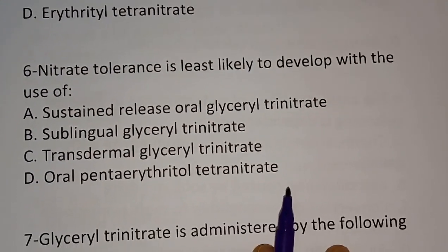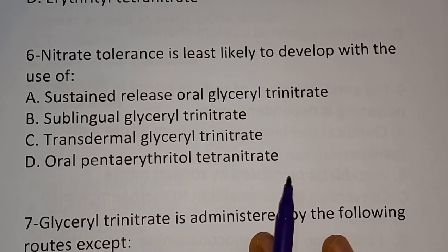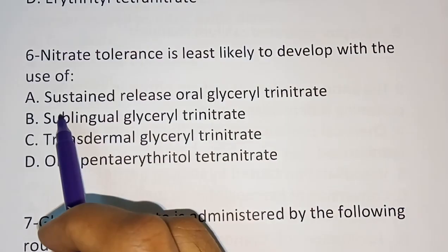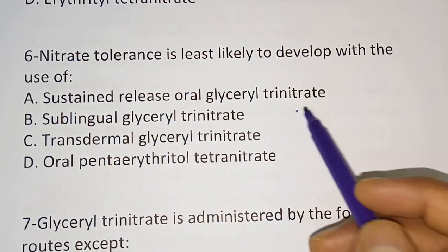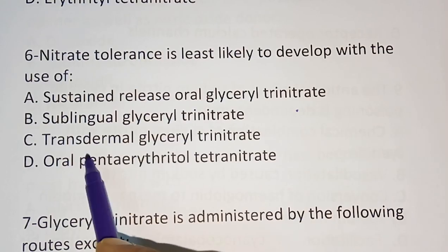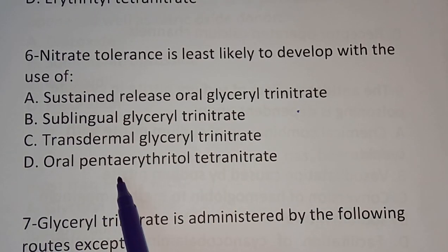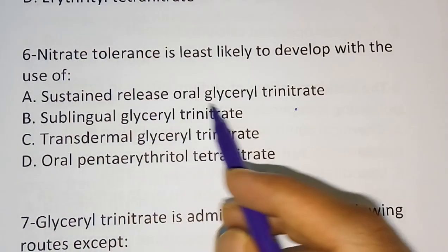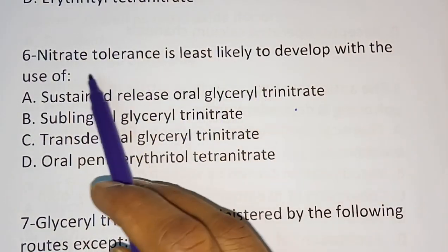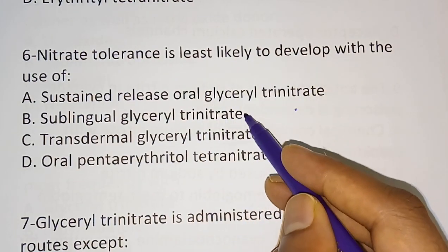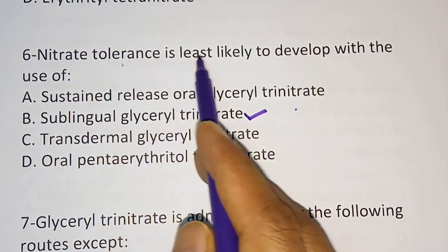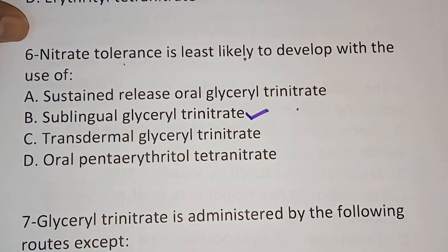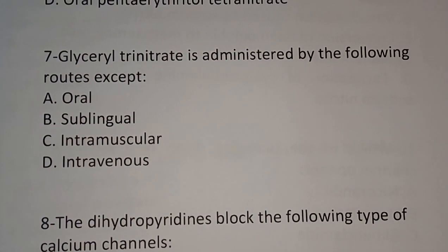Question six: nitrate tolerance is least likely to develop with the use of which drug? Options: A) sustained-release oral glycerol trinitrate, B) sublingual glycerol trinitrate, C) transdermal glycerol trinitrate, D) oral pentaerythritol tetranitrate. The correct answer is sublingual glycerol trinitrate — the chances of nitrate tolerance are least with sublingual administration.